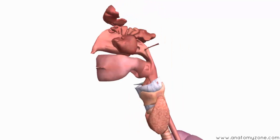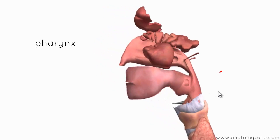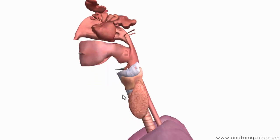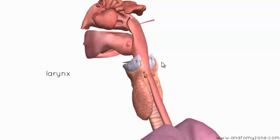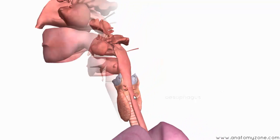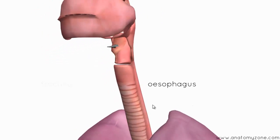After food has entered the mouth, it passes into the pharynx. The pharynx is a muscular tube which joins onto the nasal cavity and the mouth, and it connects them to the esophagus and the larynx. The larynx is the structure anteriorly, commonly referred to as the voice box. Behind it, you've got the esophagus, which runs down into the stomach. You can see the trachea anteriorly, which goes into the lungs, and the esophagus, which runs behind it posteriorly.